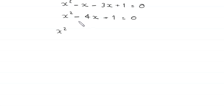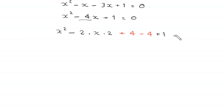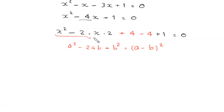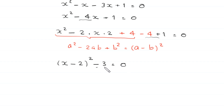To solve x² − 4x + 1 = 0, we complete the square. We write −4x as −2·x·2, then add and subtract 4: x² − 2·x·2 + 4 − 4 + 1 = 0. Using the identity a² − 2ab + b² = (a − b)², this becomes (x − 2)² − 3 = 0. Moving −3 to the right: (x − 2)² = 3.